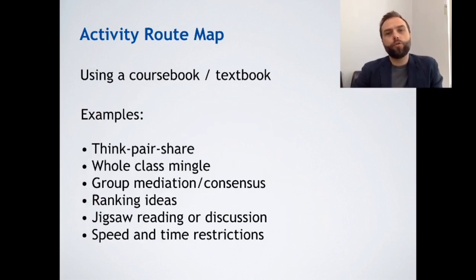Some examples of how to use a course book or textbook: Think-pair-share is a nice way of getting students to think and share ideas. Whole class mingle, stand up and move around. Group mediation or consensus, some kind of disagreement or finding agreement. Ranking ideas is a nice one - giving some examples or collecting student examples and getting them to rank the order that they like or dislike. Jigsaw reading or discussion is really good way of getting more group interaction. And you can also do speed and time restrictions. This makes activities a bit more fun. When you're using a textbook, don't just follow it like a robot. Try to adapt it into activities that are more lively and more interesting for your students.